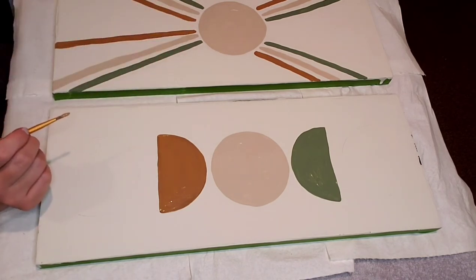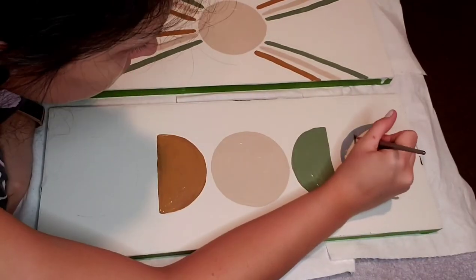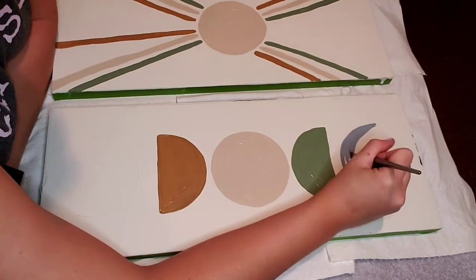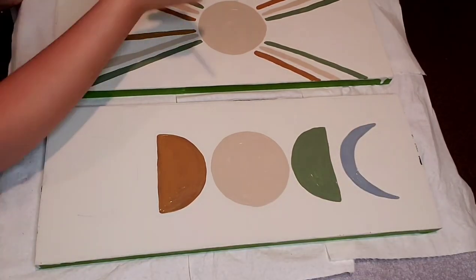The last step on the moon side is going to be to add two crescents in your fourth color, and I chose this really pretty blue jean color. And I'm just using the half circle that I drew and then filling it in, just a little bit thicker in the center and getting more narrow on each end.